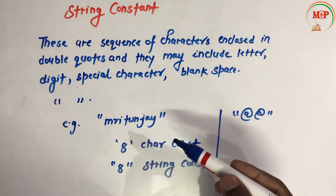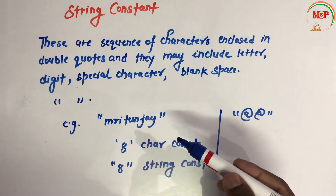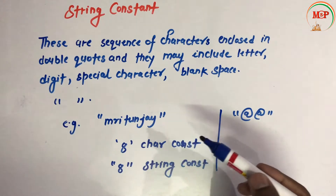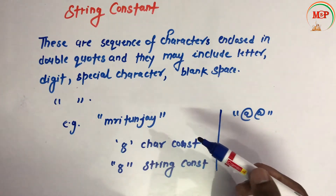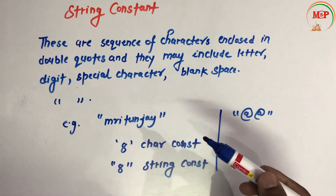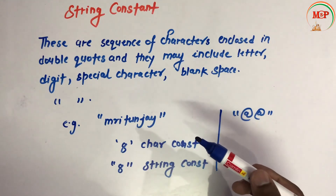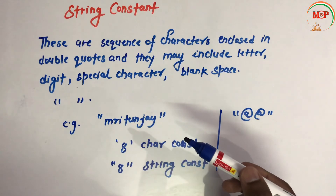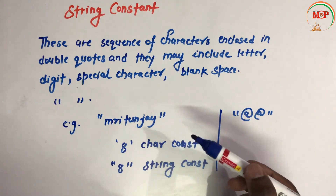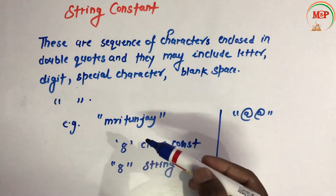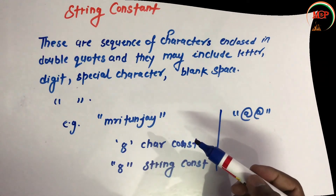If I want to run the program and see the values, I will show you in future videos using different compilers — Turbo C++, Dev compiler, Code Blocks, and NetBeans. So this is the example of string constants in C language.